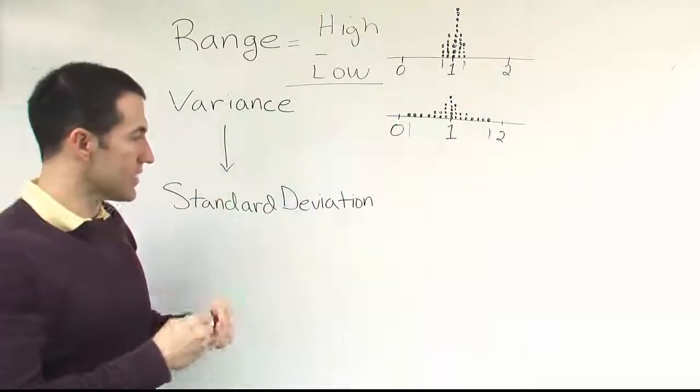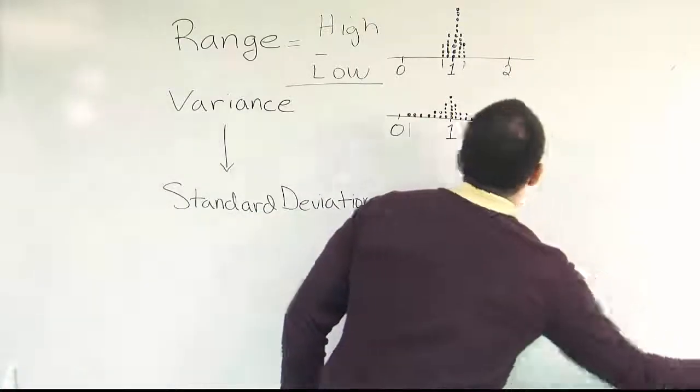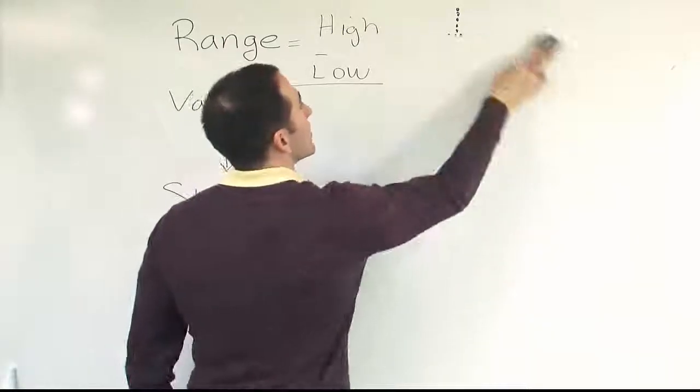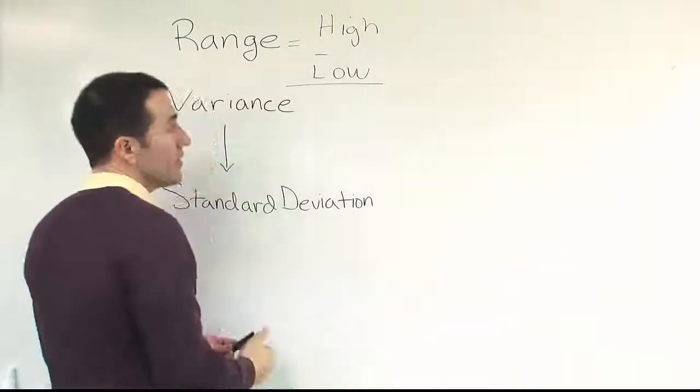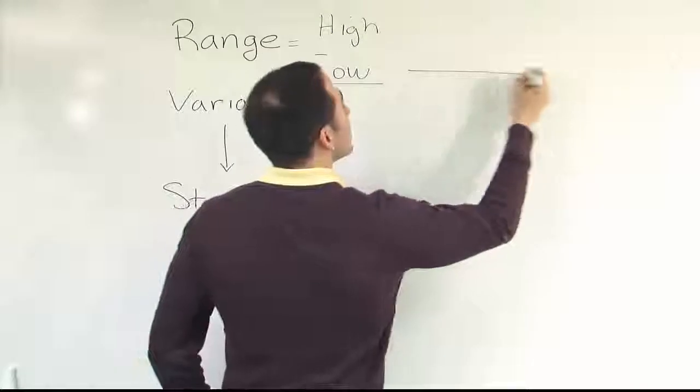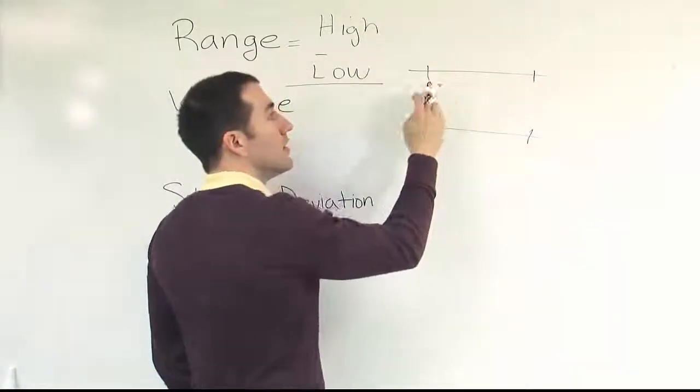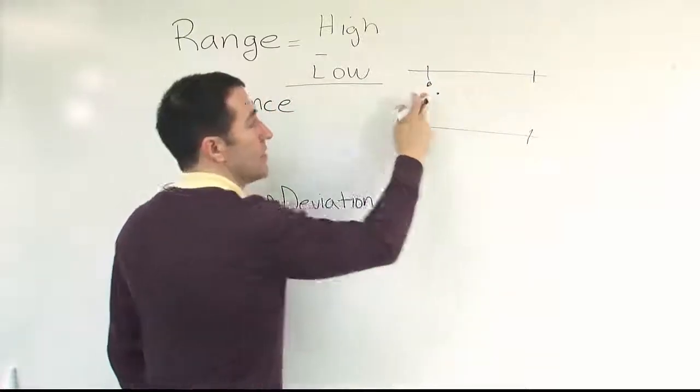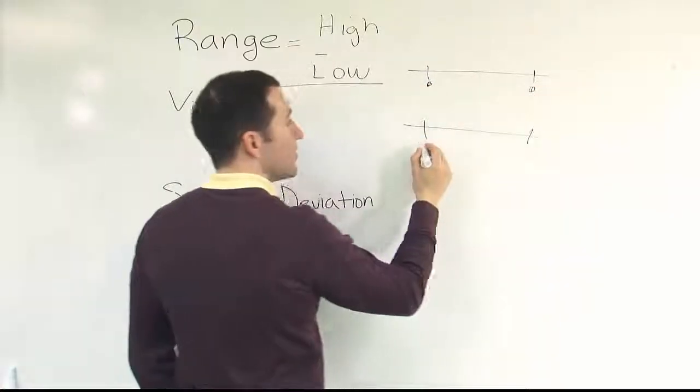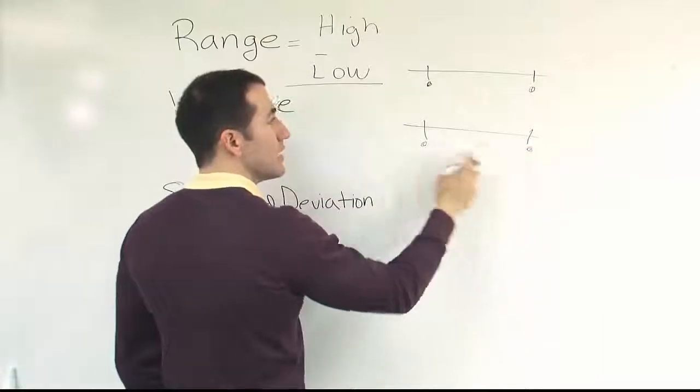The only problem with the range is that you end up seeing that there's examples that would show that it's not a great measure to be used. Take, for example, this simple example. If that's our lowest value in the data set, and that's our highest value in the data set, you could imagine two data sets with that same setup. Low, high, low, high.